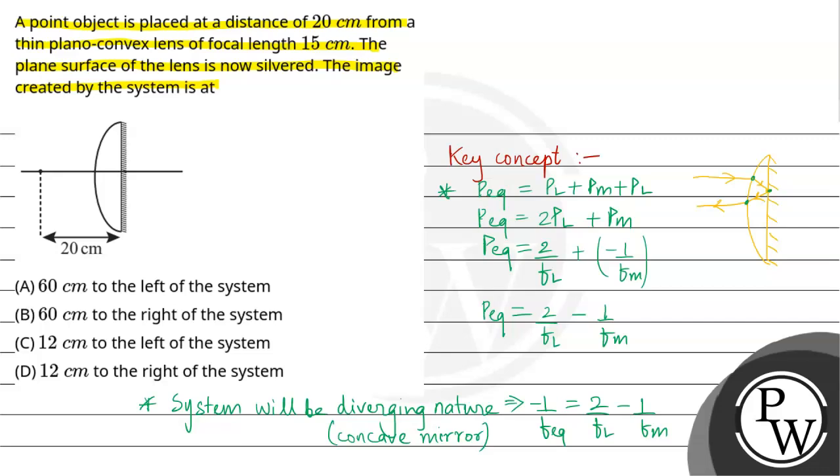Option C, 12 cm to the left of the system. Hope you understand it well, all the best.